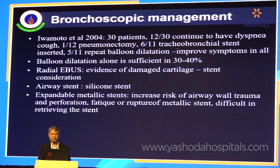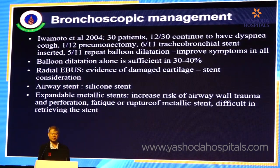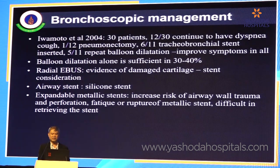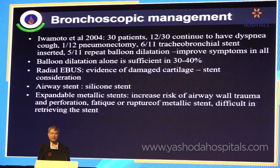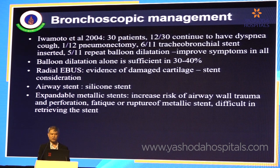Iwamoto, nearly 20 years ago, reported 30 patients. Twelve patients continued to have dyspnea after treatment. Of these 12 patients, one needed pneumonectomy, six required stent placement, and in the remaining five patients, repeated balloon dilation alone improved symptoms. So balloon dilation alone is sufficient in 30 to 40% of cases. Endobronchial ultrasound, if available, will help you early on. For airway stents, a silicone stent is suggested because it can be easily removed after the patient improves.